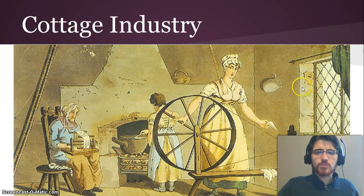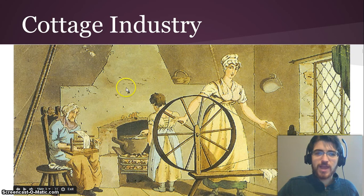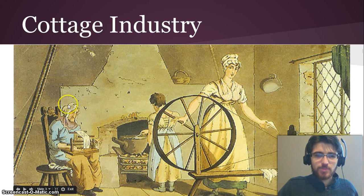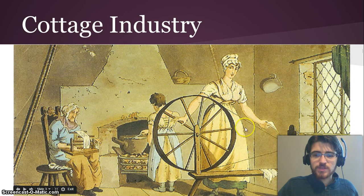This is an image of what the cottage industry looked like, and we're going to compare this to the factory system that emerged during the Industrial Revolution. As you can see, there are multiple generations — child, parent, grandparent — all in the same home together, doing work at the same time, all towards the same goal, because you can see that they're making this into cloth here.